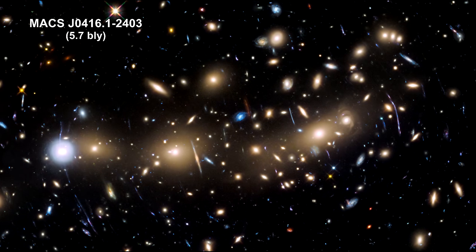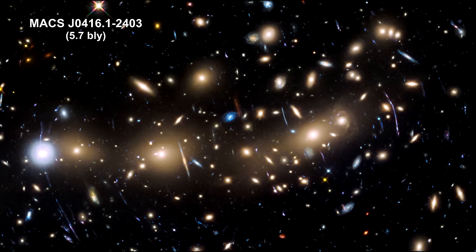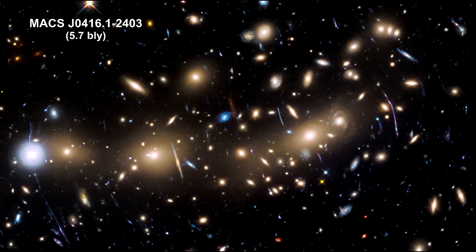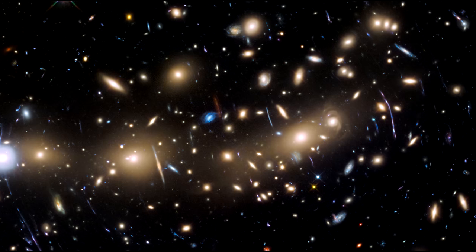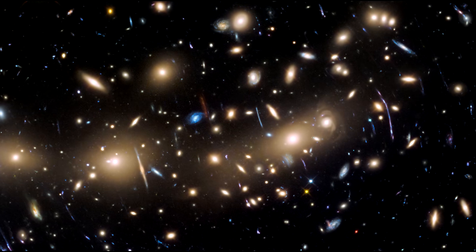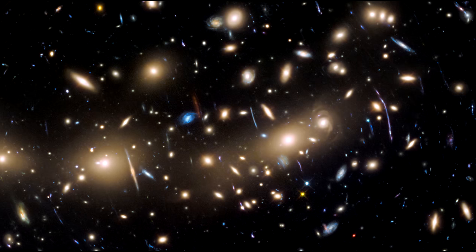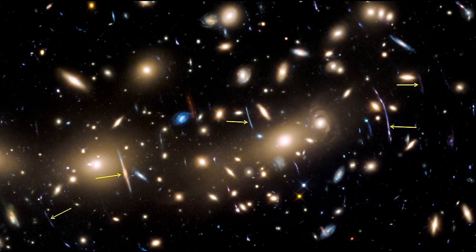And here's another cluster, 5.7 billion light-years away. These foreground galaxy clusters are magnifying the light from the faint galaxies that lie far behind the clusters themselves. These faint lensed galaxies are around 12 billion light-years away. It's the gravitational lensing that allows us to see that far back in time. Without the magnification, these galaxies would be invisible for us.